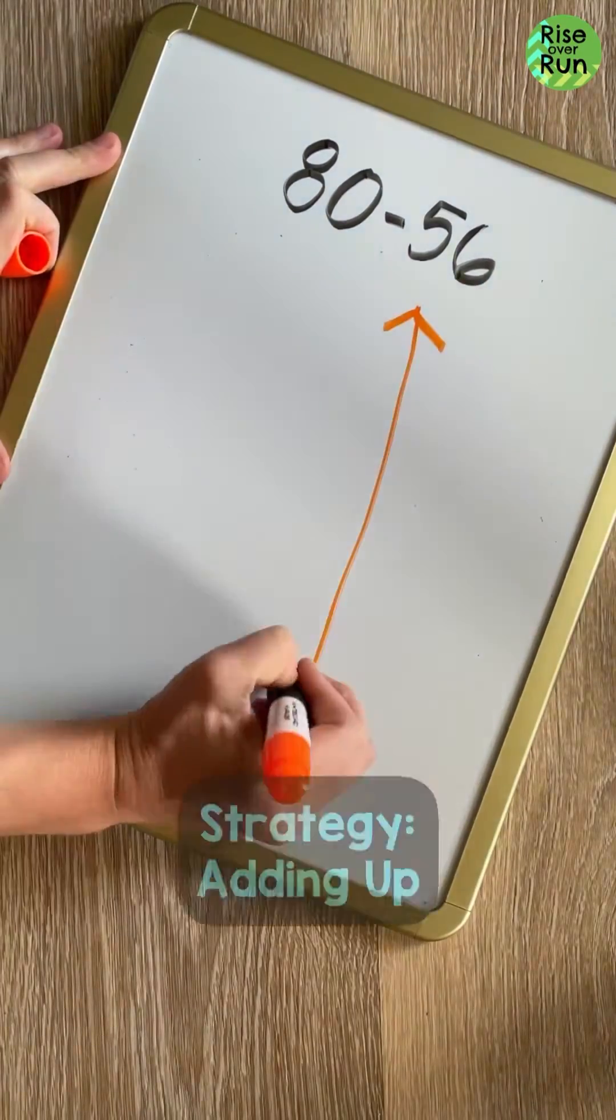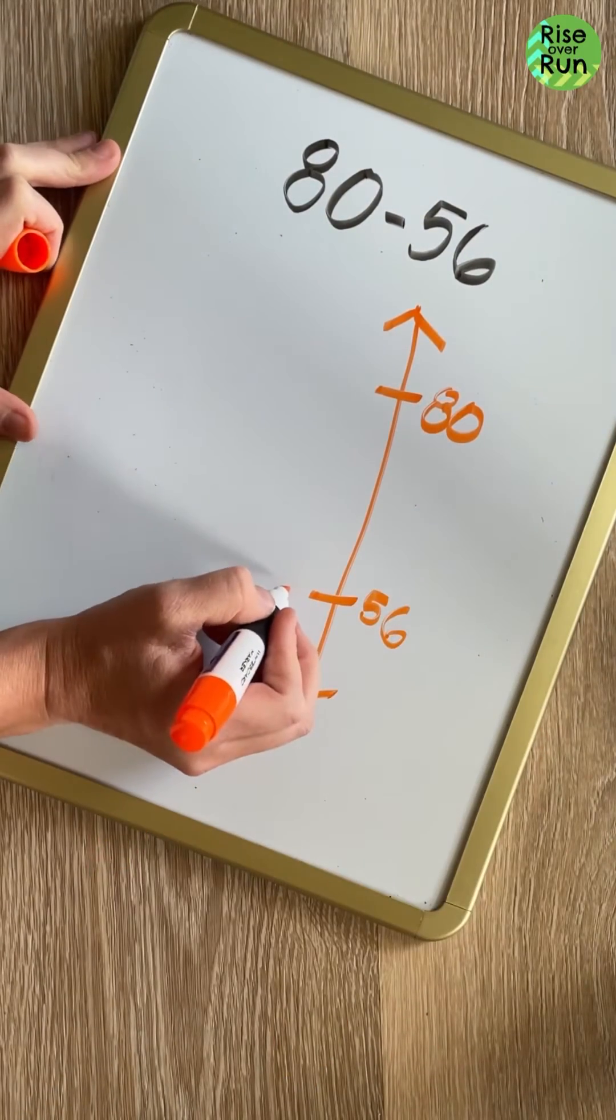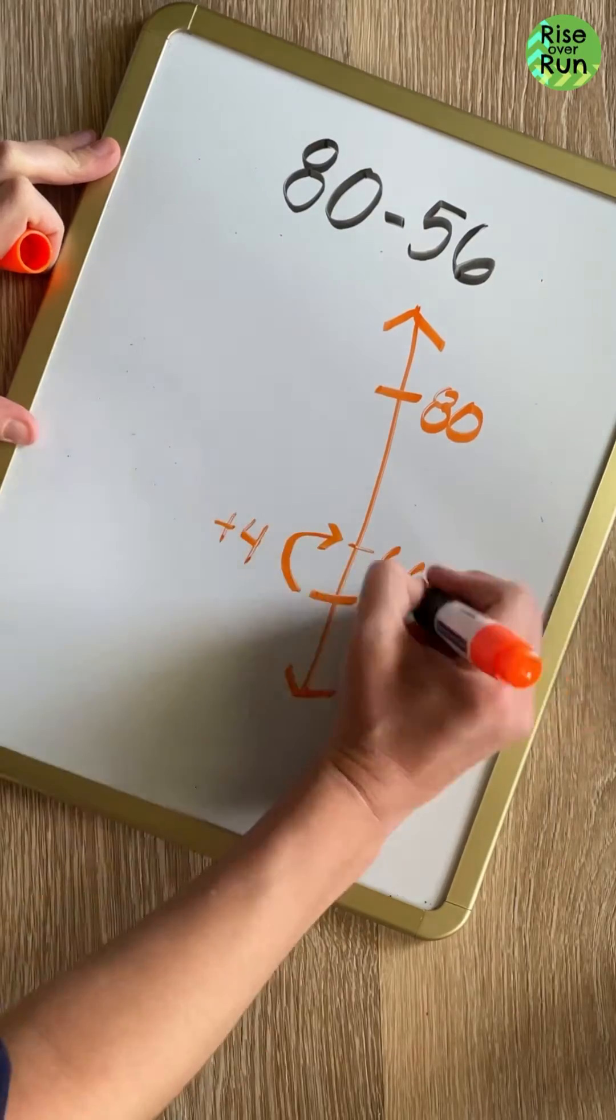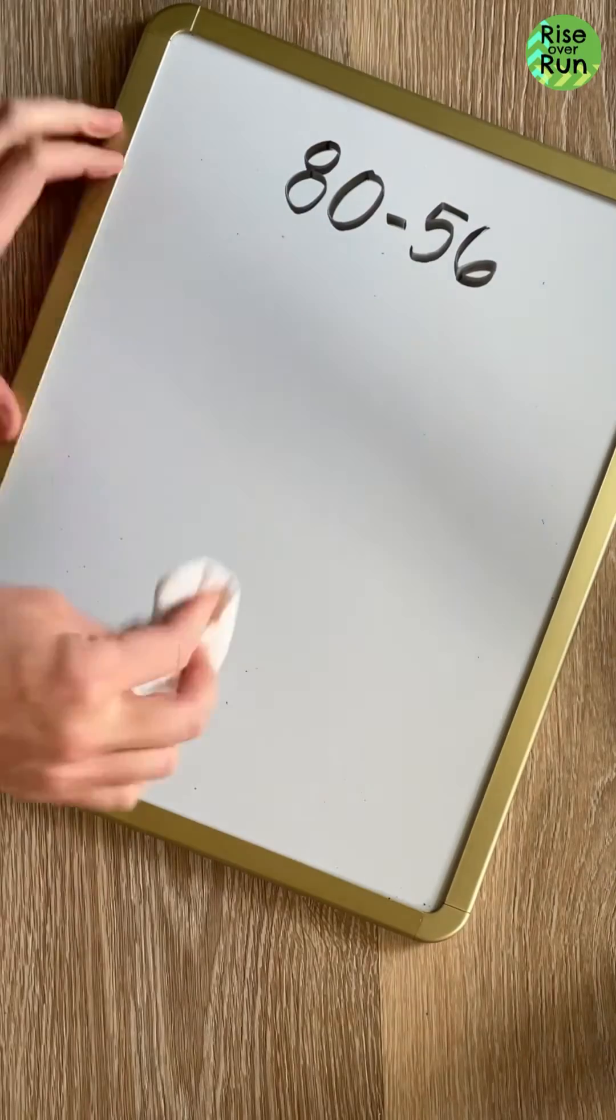Now let's try adding up. Addition is the inverse of subtraction, so we can think about what do we need to add to 56 to get 80. First, I'll add 4 to get me to 60, and then I'll add 20 to get me to 80. I added a total of 24.